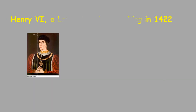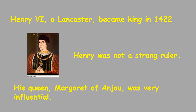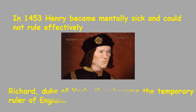One of them became King. Henry VI became King in 1422. Henry was not a strong ruler, but his queen, Margaret of Anjou, was very influential. But in 1453, Henry became mentally sick and could not rule effectively. So Richard, Duke of York, became the temporary ruler of England.